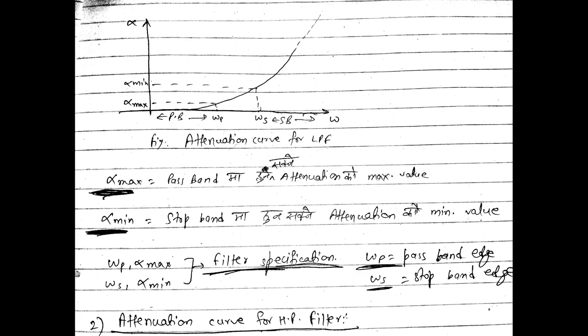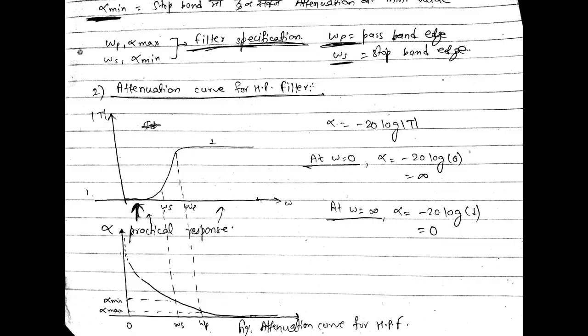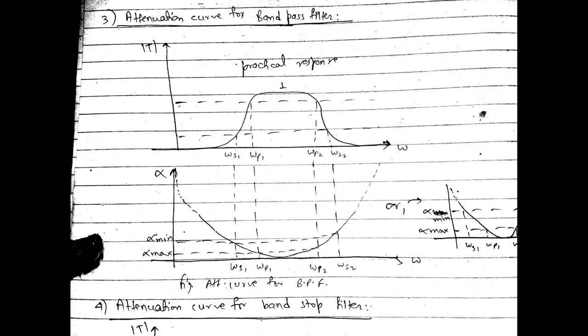You should be familiar with αmax, αmin, ωp, and ωs. For a high pass filter, you can draw the attenuation curve by substituting ω = 0 and ω = ∞ into the attenuation formula. From 0 to ωs the practical response is increasing, so the attenuation curve is decreasing. From ωs to ωp the attenuation decreases further. After ωp the practical response attains a constant value of 1, so the attenuation approaches approximately 0 dB.